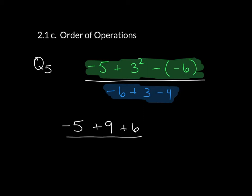And then I'm just going to copy my denominator down here, which is negative 6 plus 3 minus 4. Now treat everything in the numerator as one piece, and negative 5 plus 9 plus 6 is equal to 10.